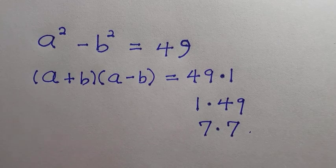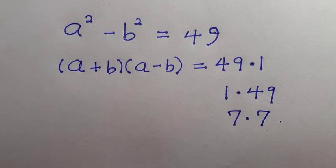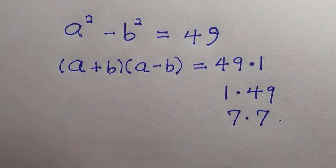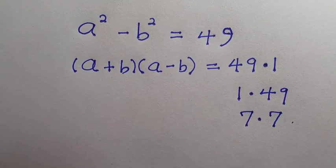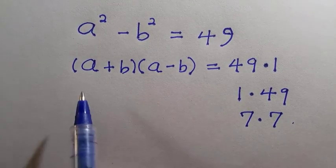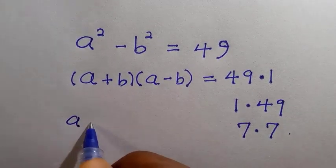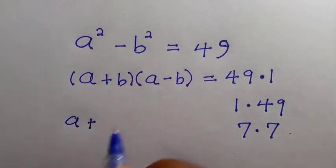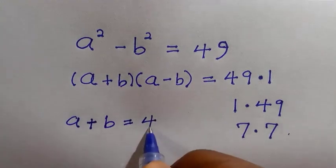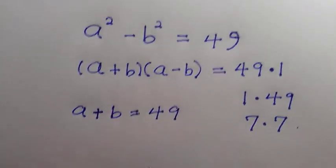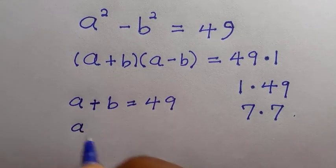From all these three factor pairs, only two are valid based on the condition for a plus b multiplying a minus b. Because a plus b must always be greater than or equal to a minus b, a plus b can never be less than a minus b. This gives us the fixed method to apply.